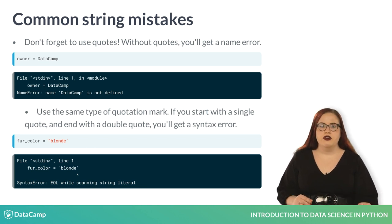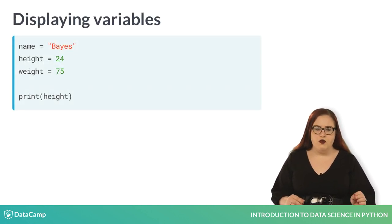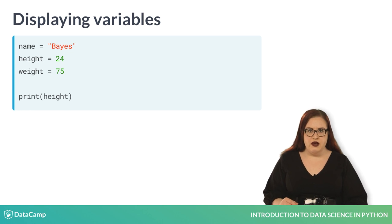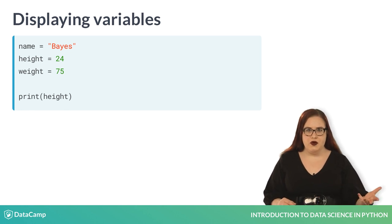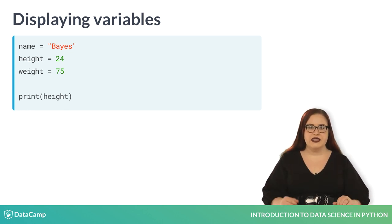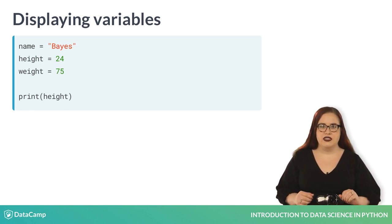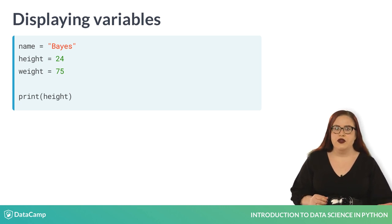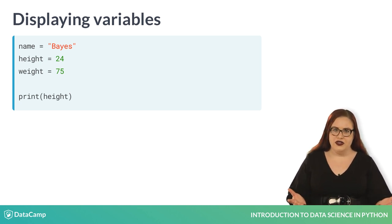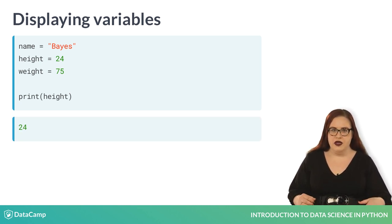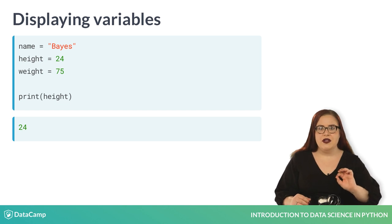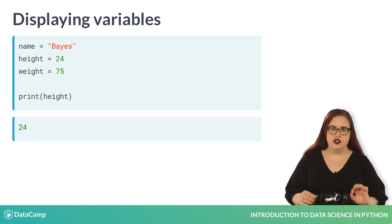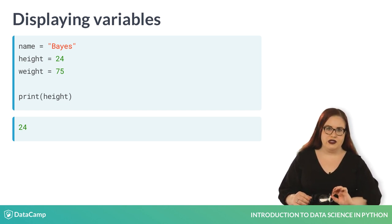If we want to know the current value of one of our variables, we can use print. We simply type the word print and put our variable name inside of the parentheses. When we execute the code, the value will appear in the console. Remember, the variable name is not a string, so we don't put it in quotes.